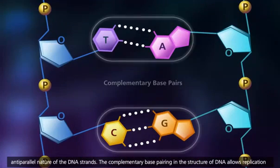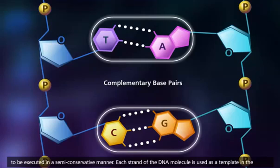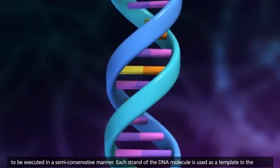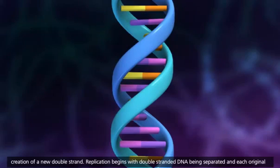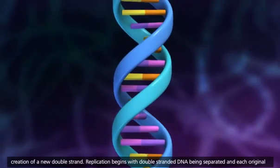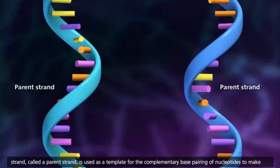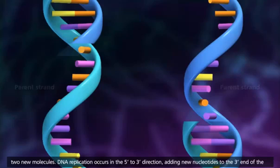The complementary base pairing in the structure of DNA allows replication to be executed in a semi-conservative manner. Each strand of the DNA molecule is used as a template in the creation of a new double strand. Replication begins with double-stranded DNA being separated, and each original strand, called a parent strand, is used as a template for the complementary base pairing of nucleotides to make two new molecules.